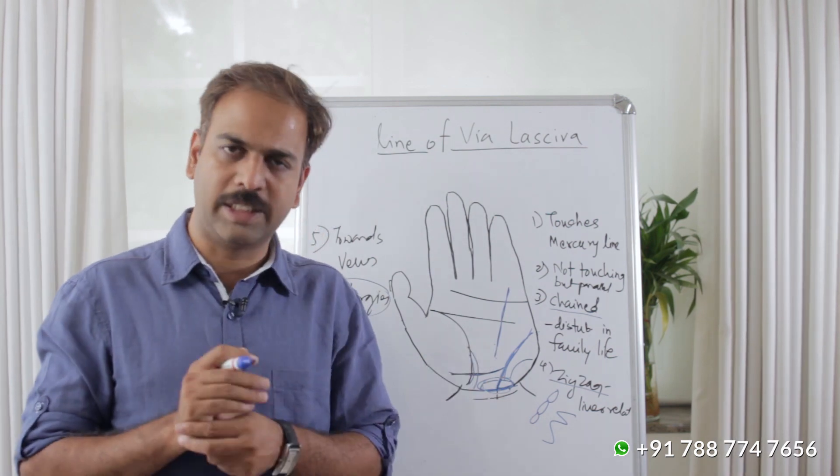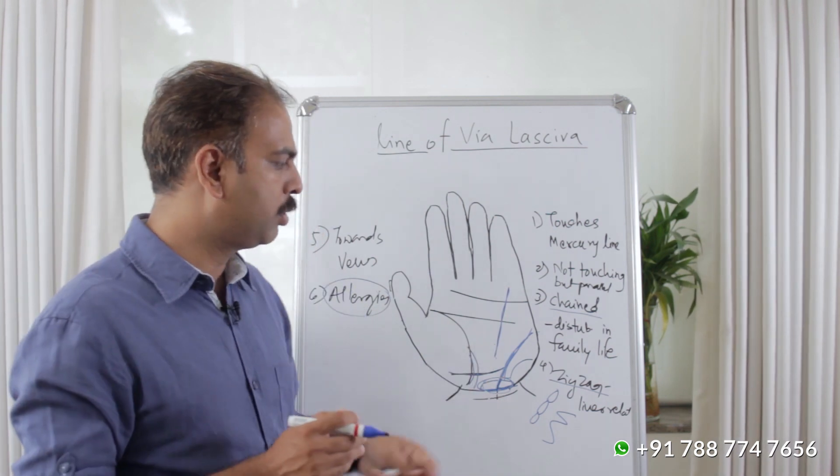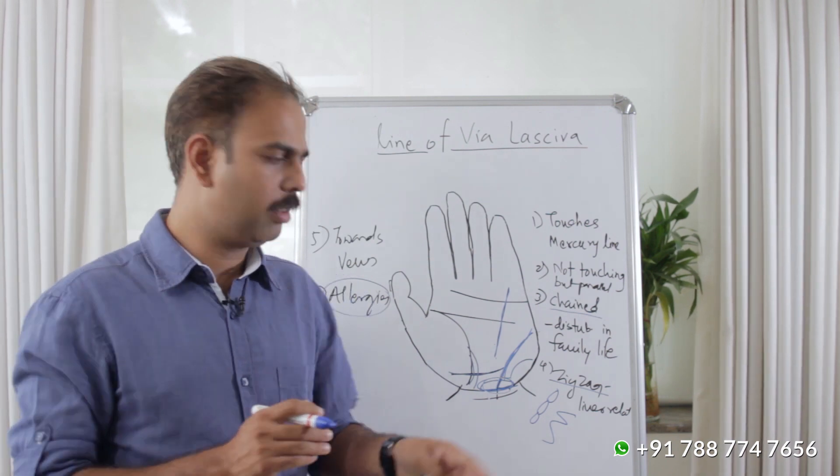If this Via-Lasciva line is zigzag, then the line will be related to the liver.